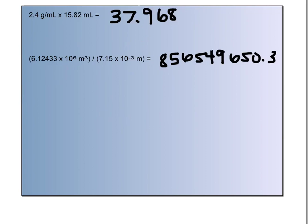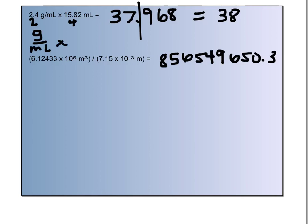Here are some more calculations with answers written out unrounded. We've got 2.4 grams per milliliter times 15.82 milliliters — two significant figures versus four. When we multiply and divide, we always round to the lower number of significant figures. So we take this answer of 37.968 and round it to two significant figures, which gives us 38. For units: grams per milliliter times milliliters — the milliliters cancel — and we're left with just grams. So 38 grams is our final answer.